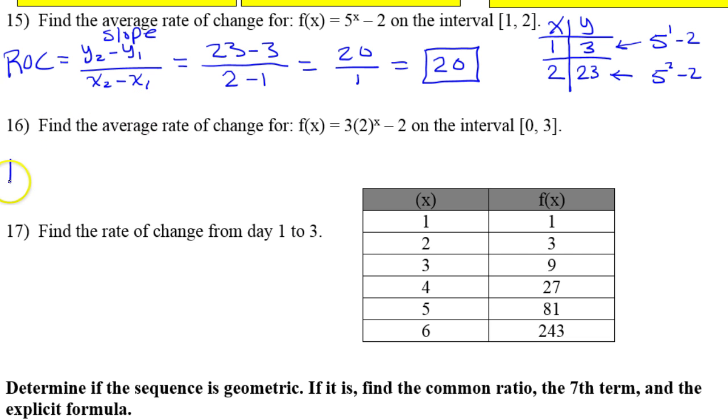So for number 16, again, I'm going to need that average rate of change. I'm still using this formula, y minus y over x minus x. I'm not going to copy the formula again. Once again, I'm going to make a little table of values, though. So I've got my x's and my y's. The x's are 0 and 3.